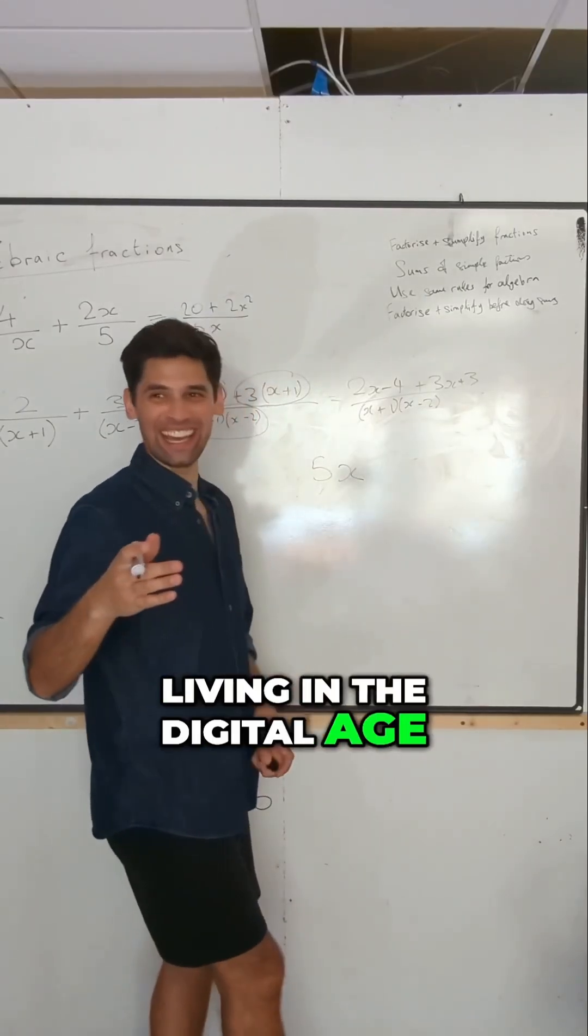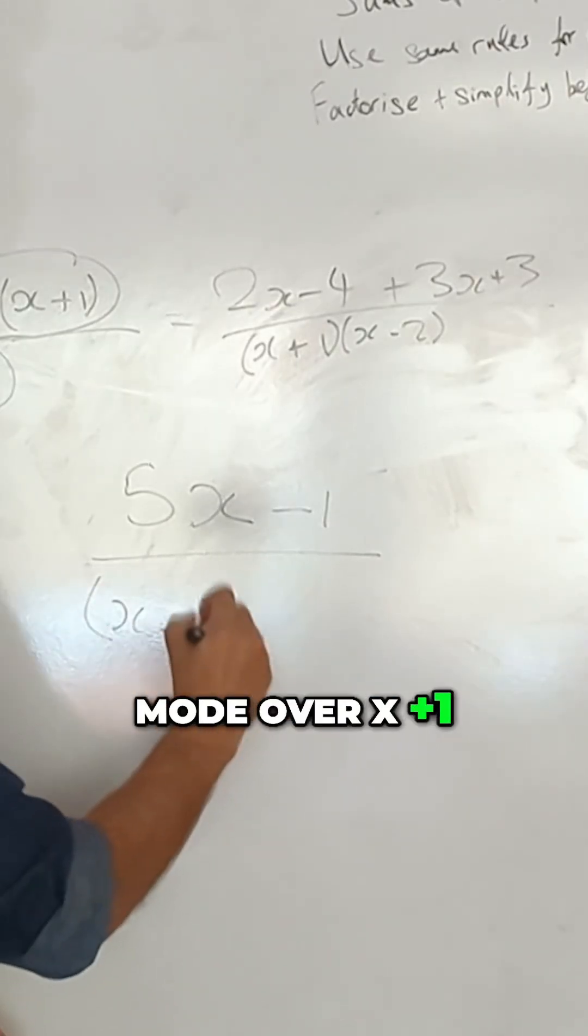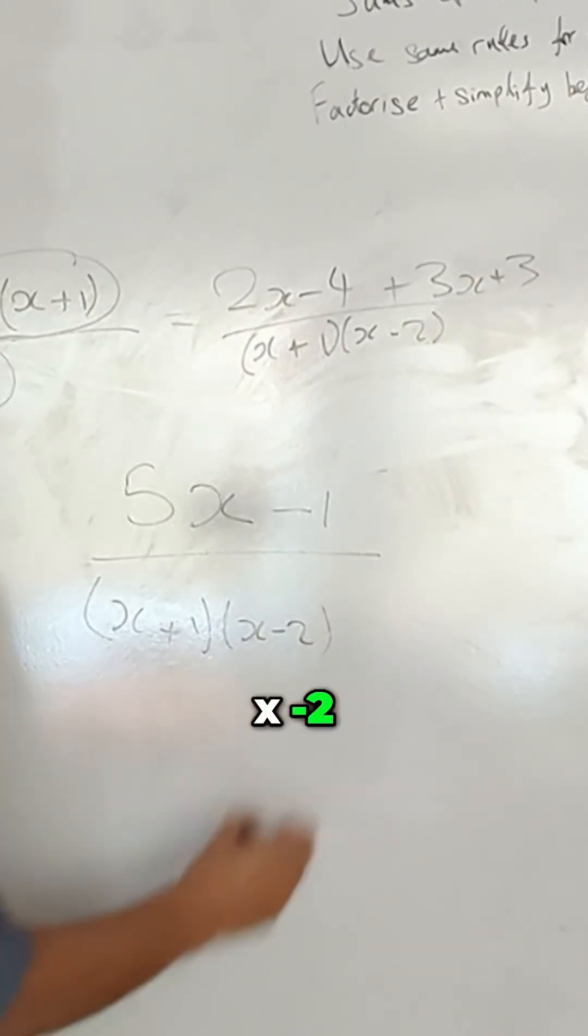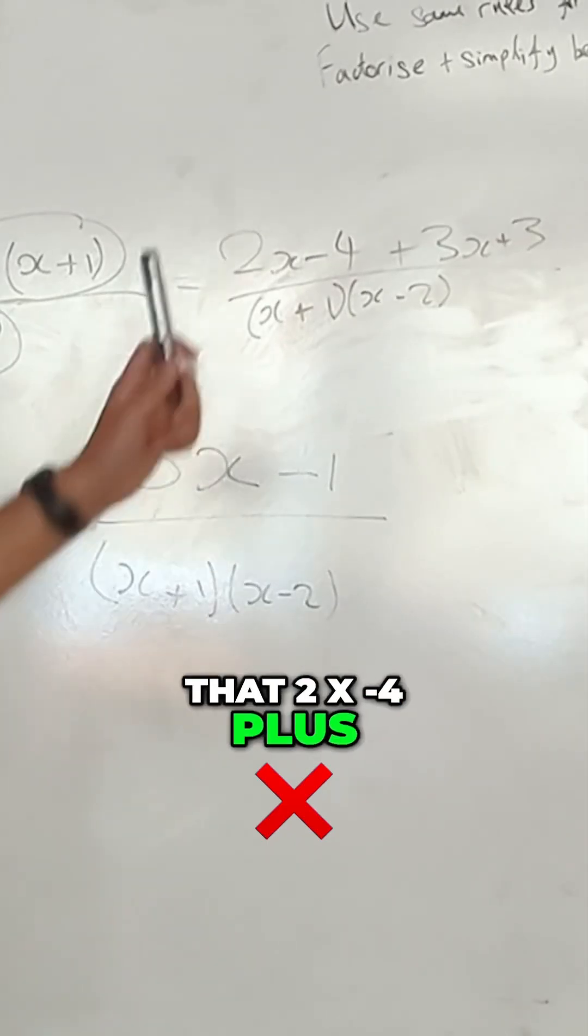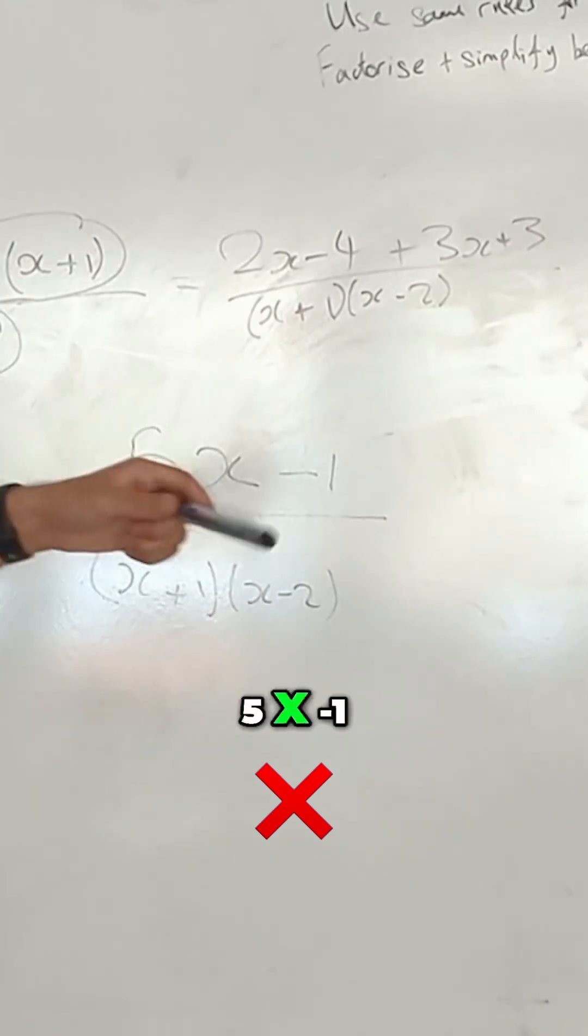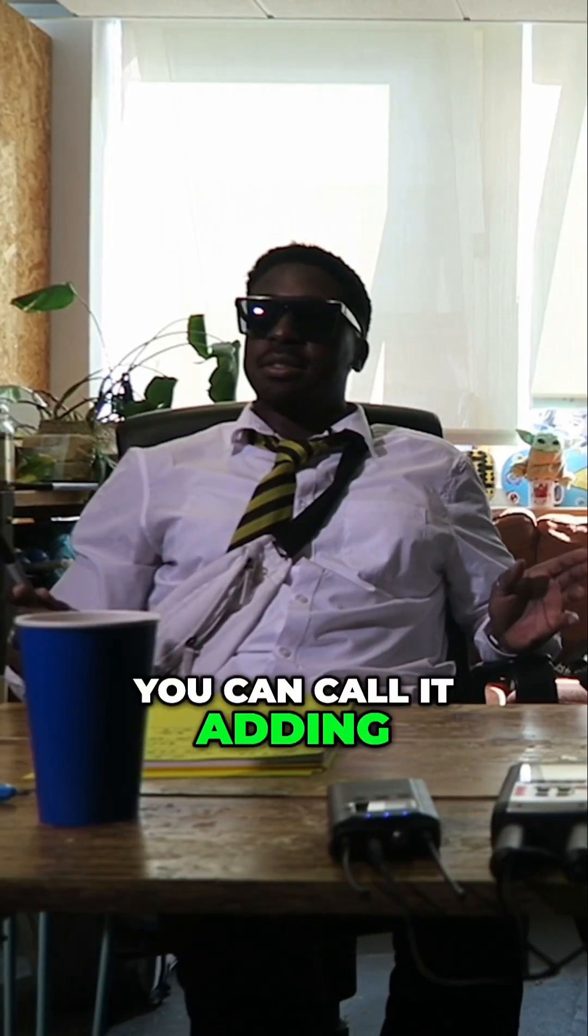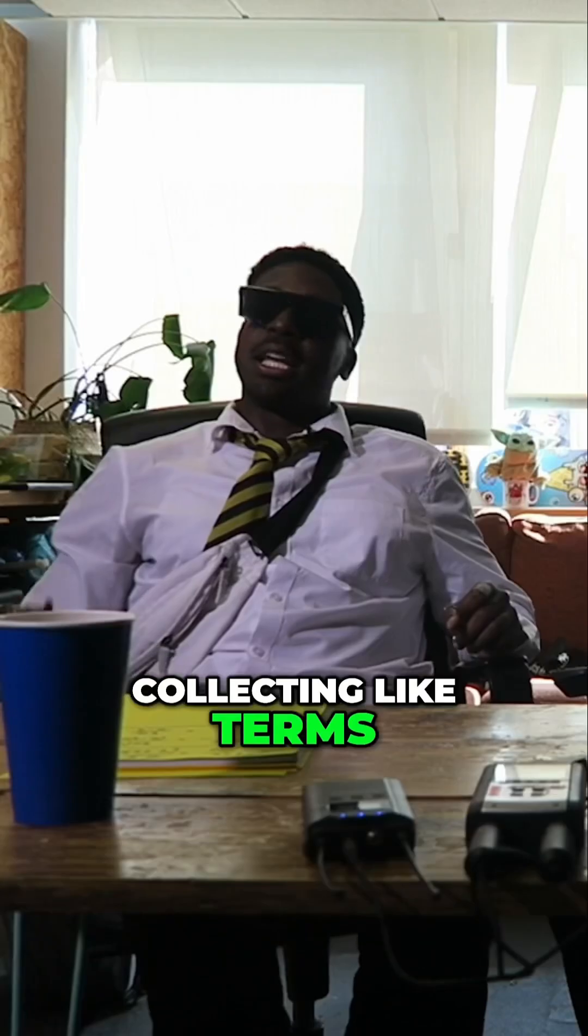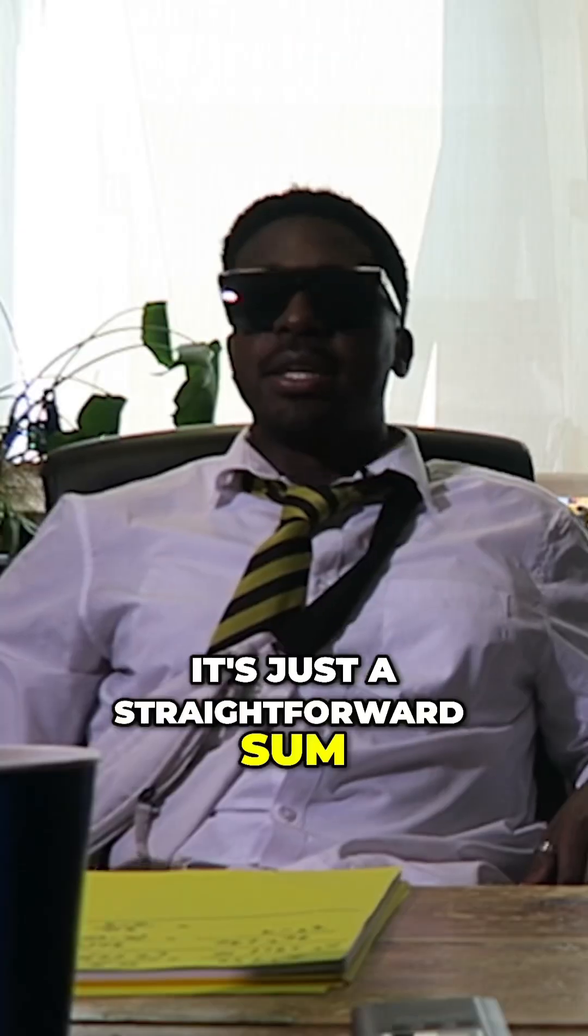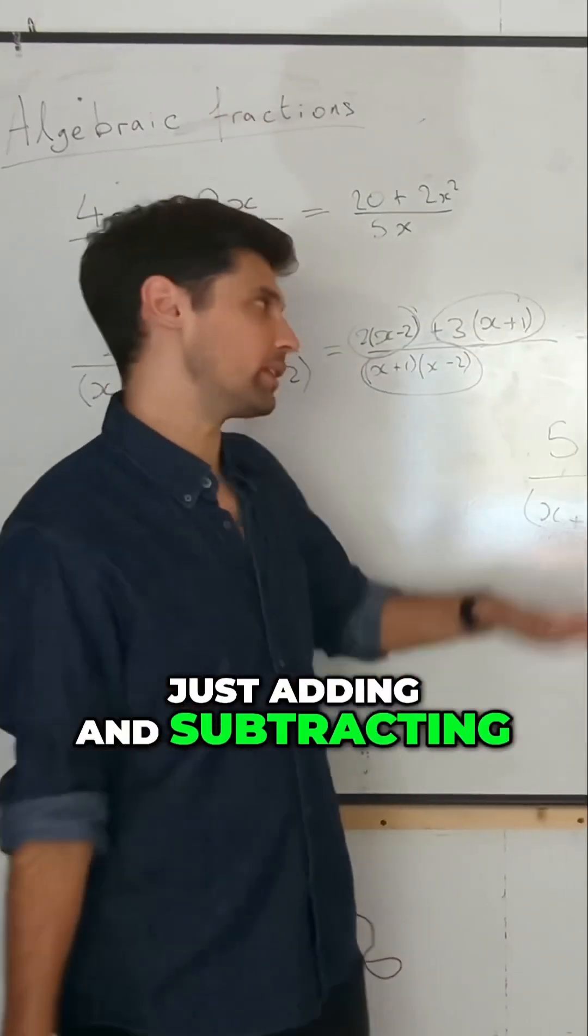Living in the digital age here. Man's in digital, man. Over x plus 1, x minus 2. But what you just did from that 2x minus 4 plus, changing that to the 5x minus 1, you can call it collecting like terms. Yeah, it's just a straightforward sum. Yeah, it's not complicated. It's not multiplication or division, just adding and subtracting. Cool.